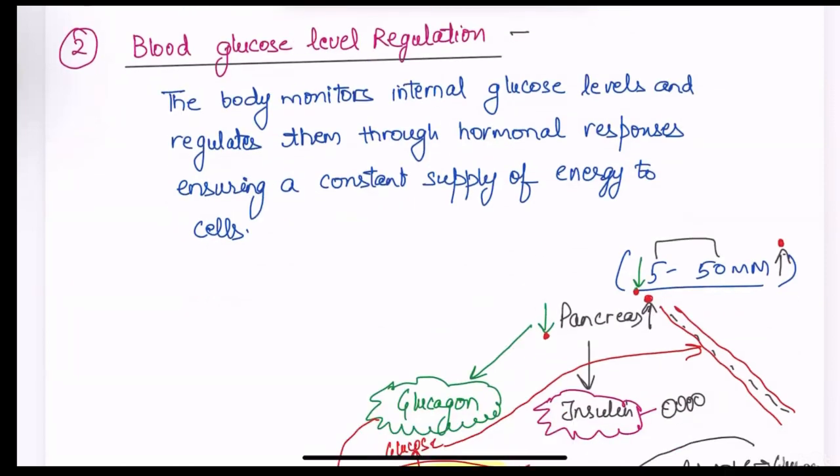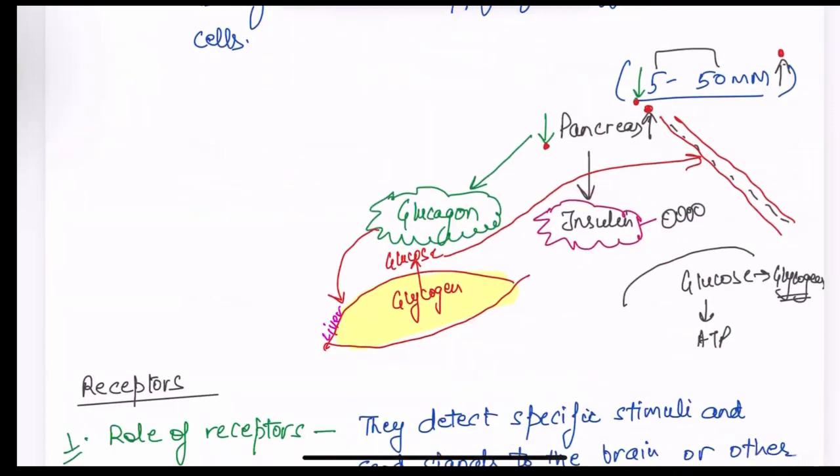For example, let's assume that pancreas. So, the job of pancreas is to secrete two types of hormones. We are just talking about two hormones over here. The glucose concentration inside our body should be within 5 to 50 millimole range. If it goes above 50 millimoles,